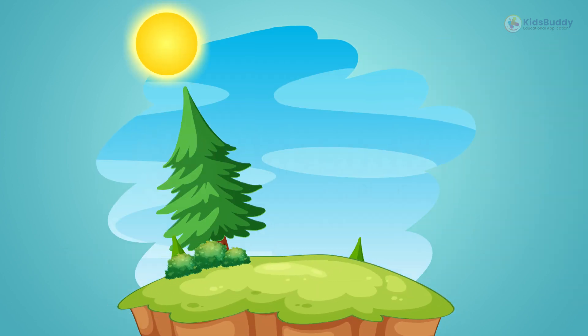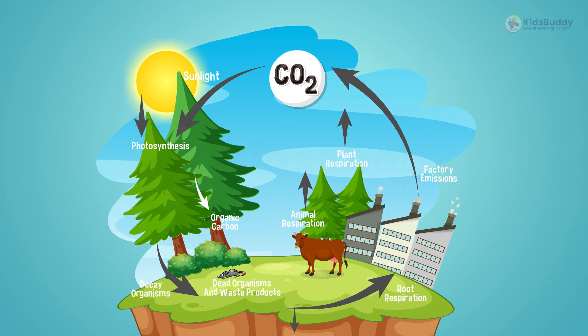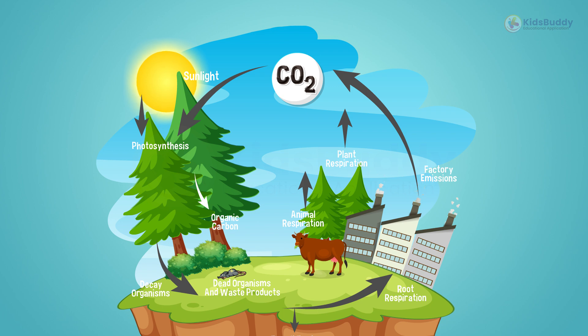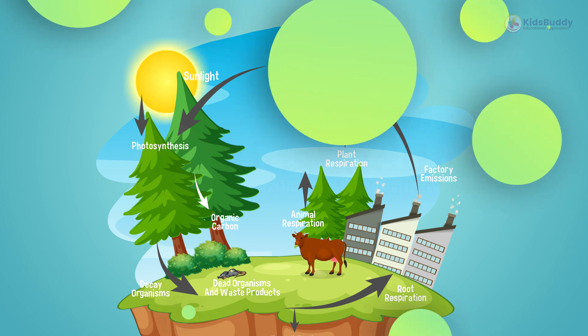Carbon is constantly being used and replaced in nature through the carbon cycle. The carbon cycle shows the movement of carbon in elemental and combined states on the earth. Let us check how the carbon cycle works.